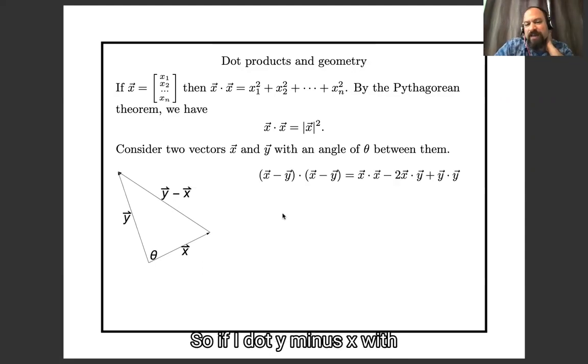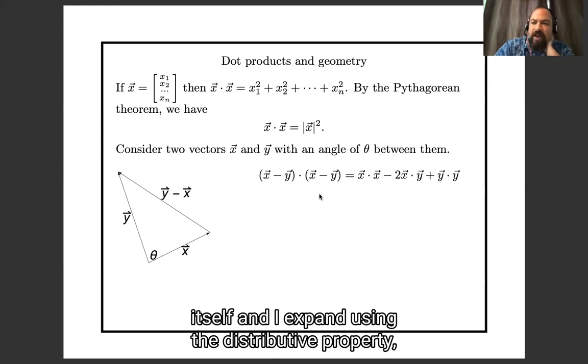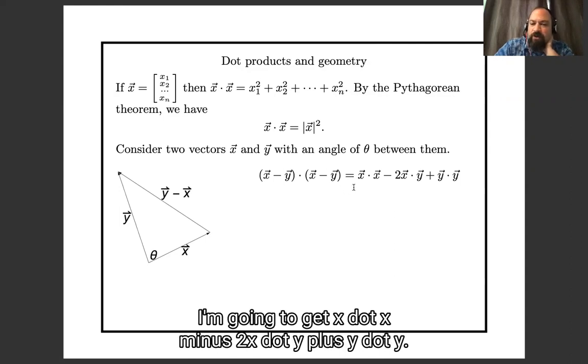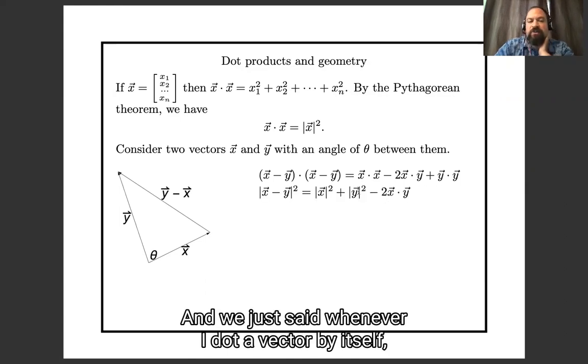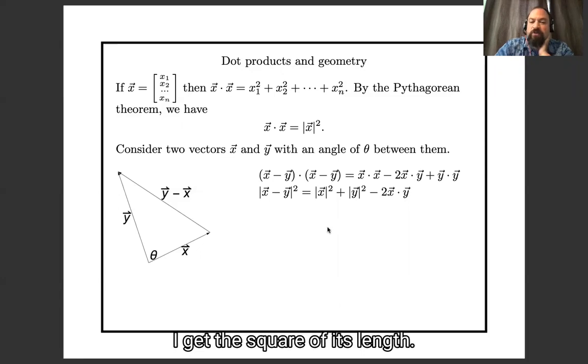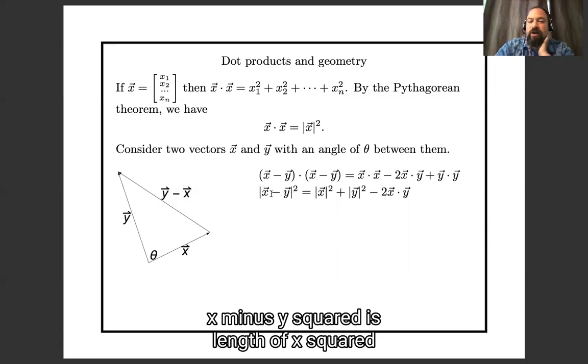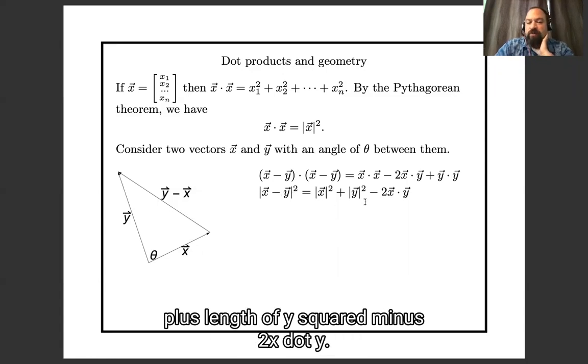So, if I dot y minus x with itself, and I expand using a distributive property, I'm going to get x dot x minus 2 x dot y plus y dot y. And we just said, whenever I dot a vector by itself, I get the square of its length. So, this gives me length of x minus y squared is length of x squared plus length of y squared minus 2 x dot y.